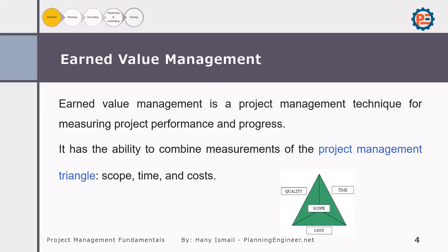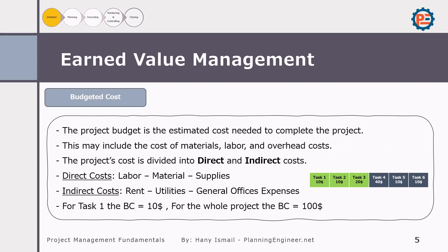Earned Value Management is a technique for measuring project performance and progress. It combines measurements of the project management triangle — scope, time, and cost. This triangle allows for a more accurate assessment of how a project is performing and helps identify any deviation from the plan. We have mainly scope, time, and cost, and we use them to evaluate our project. Let's see in a practical way how we can understand EVM.